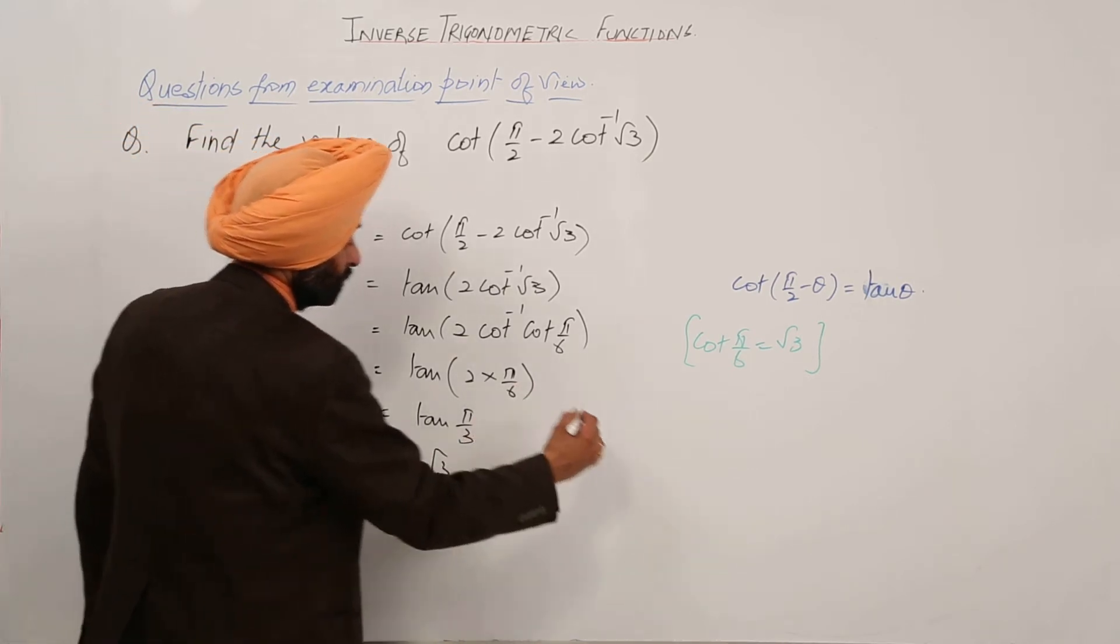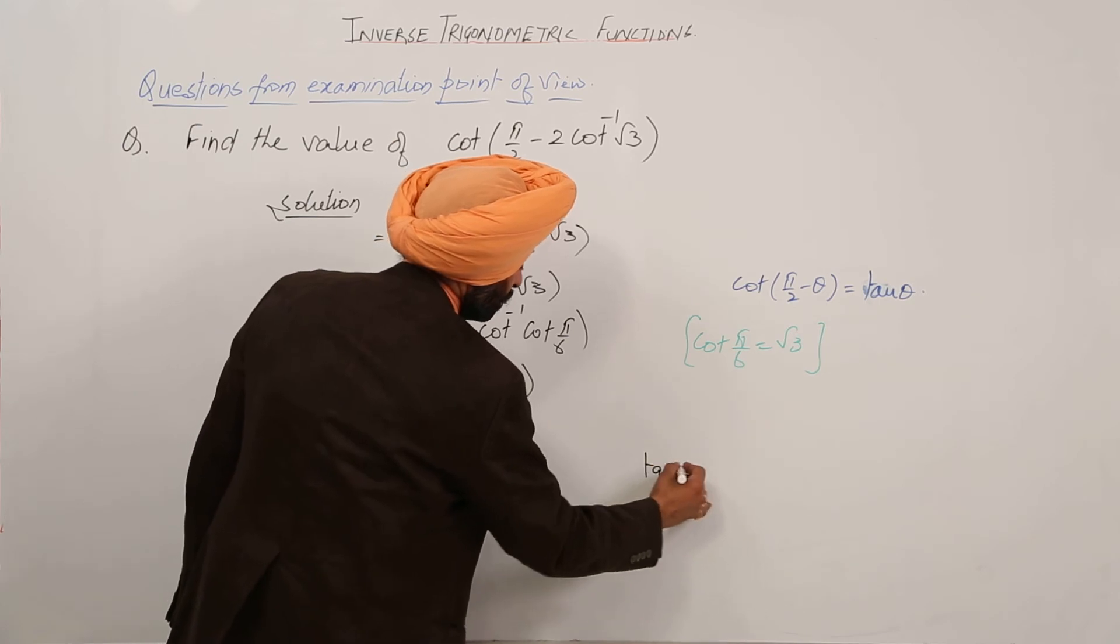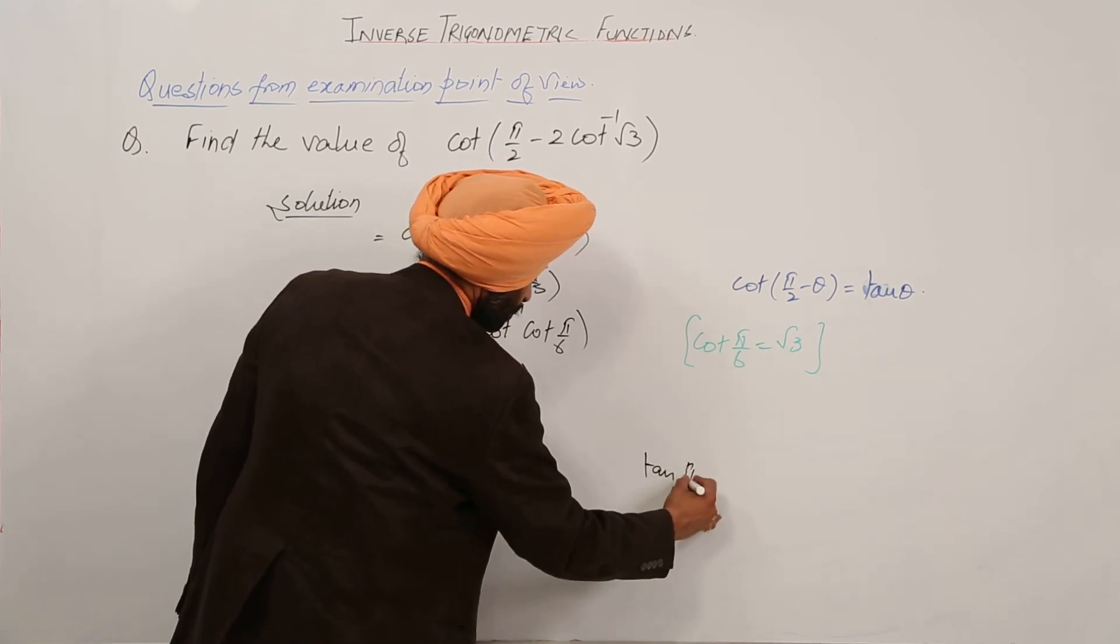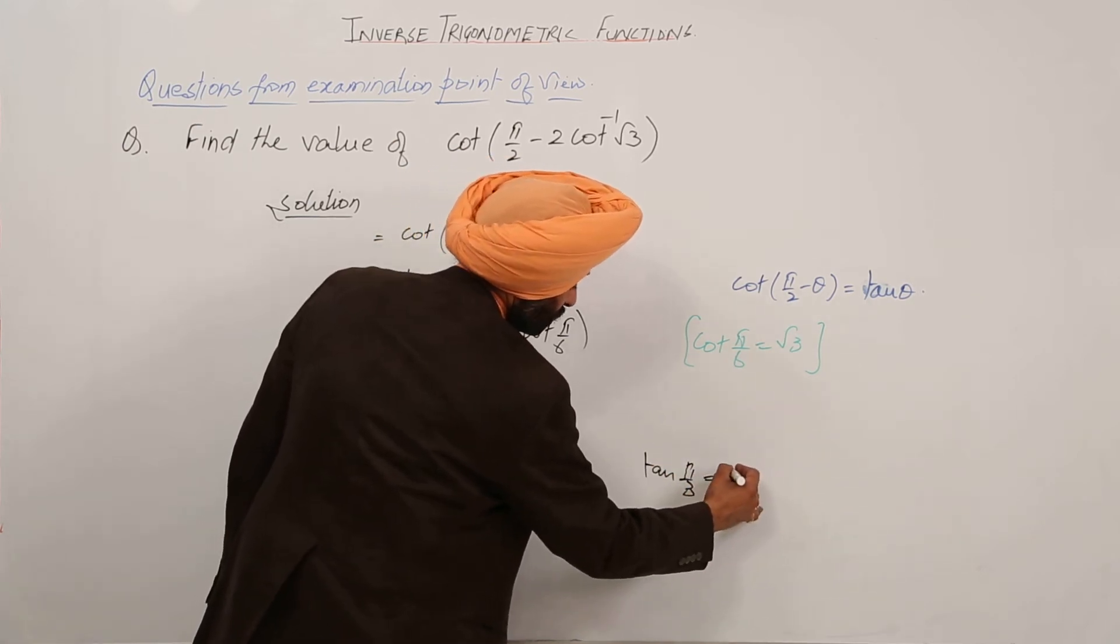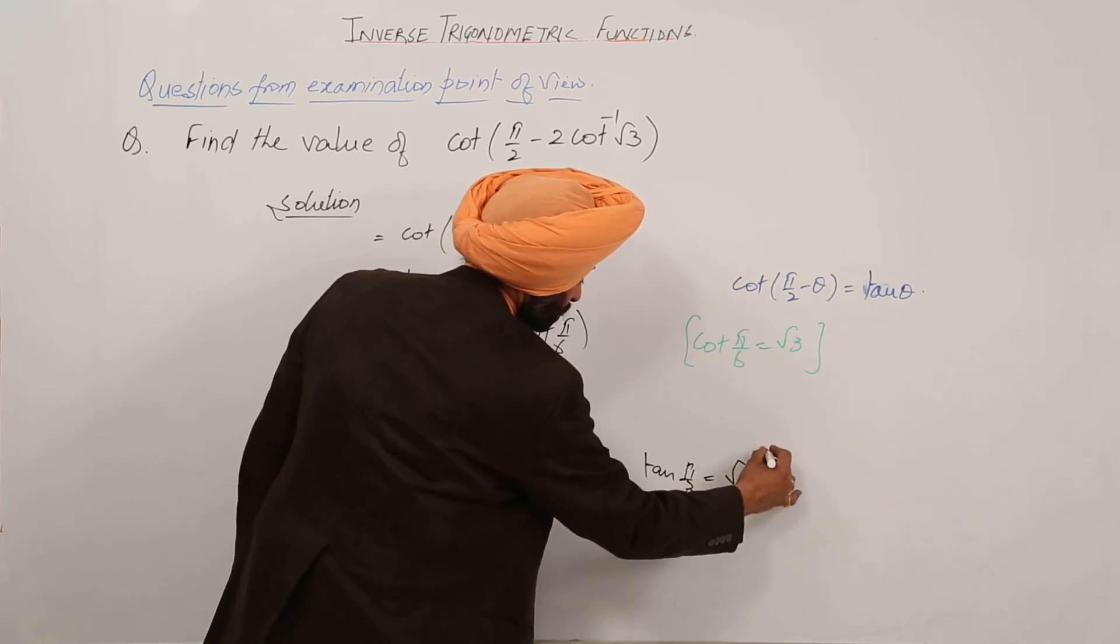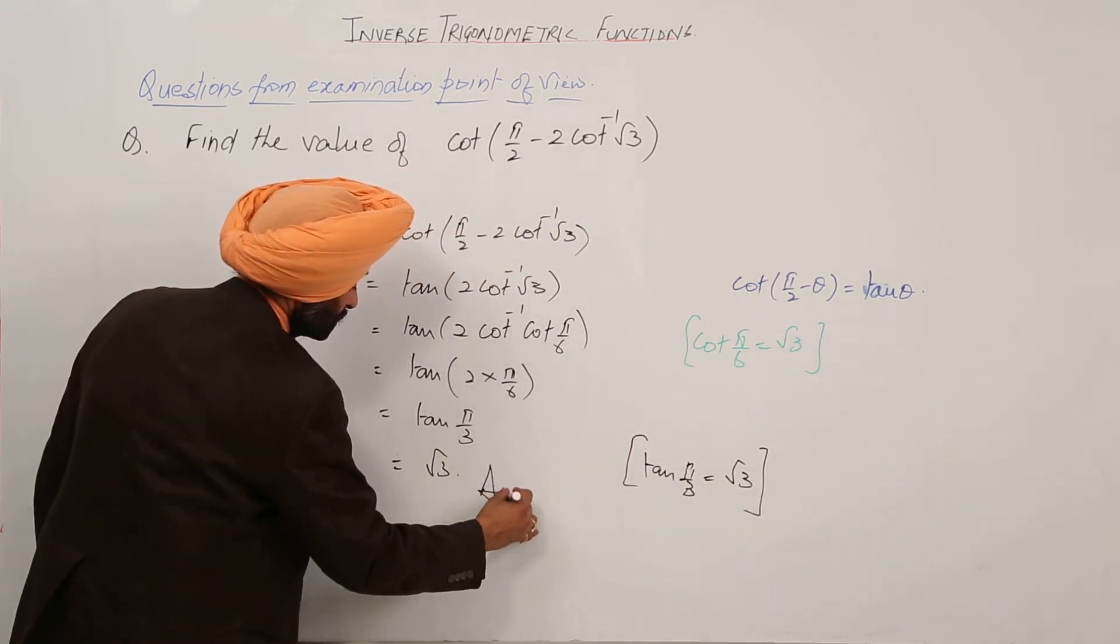It is √3. Tan(π/3) = √3. So this is the answer.